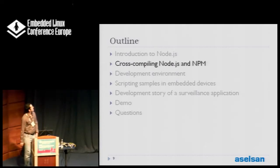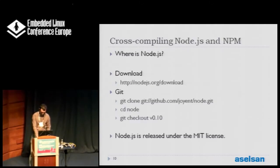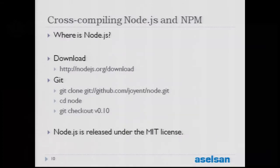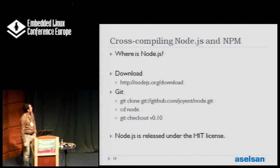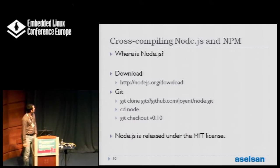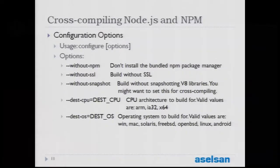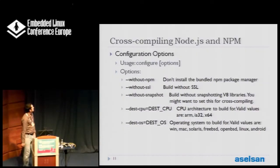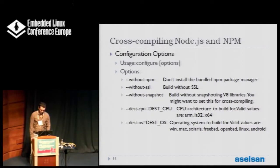Having briefly covered Node, in this part I will explain how we can cross-compile Node and its package manager NPM. The official address of Node is nodejs.org, and you can get the tarballs from the /download address, or use Git to get the code. Its license is MIT, which is quite flexible so you can make changes. We build Node using the classic ./configure, make, and make install. But when doing it on embedded systems, there are some important configuration options we must choose carefully.